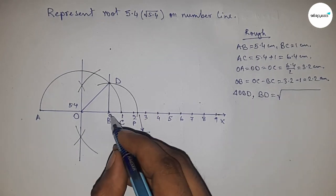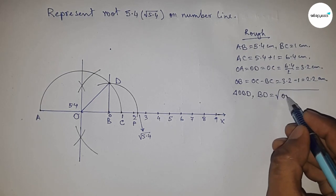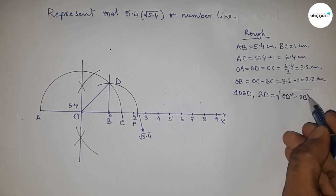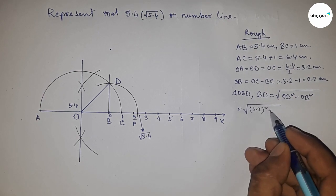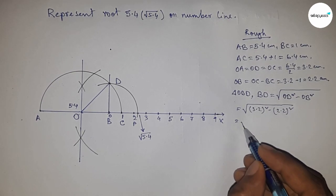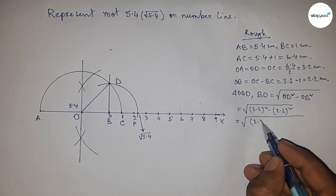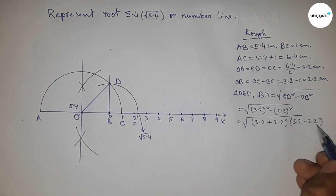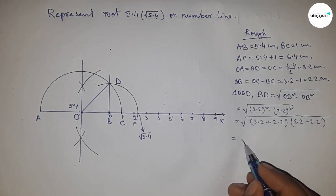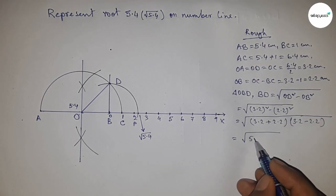So OD square minus OB square. Now putting the value of OD and OB. Now I'm going to use the formula here: a square minus b square equals a plus b times a minus b. So applying the formula here, from this we get 5.4 into 1.